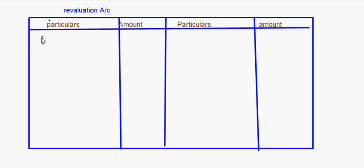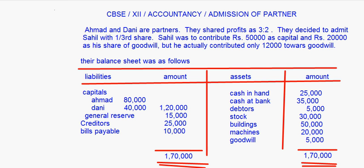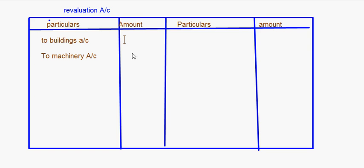Building and machine are depreciating by 5%. There are two buildings account and two machinery account entries here. Looking at the values: building is 50,000 and machine is 20,000. So 50,000 into 5 upon 100 gives you 2,500, and 20,000 into 5 upon 100 gives us 1,000 rupees.